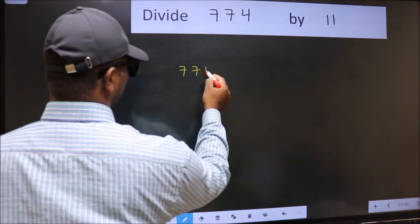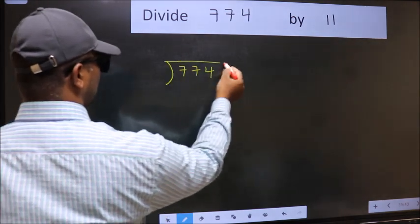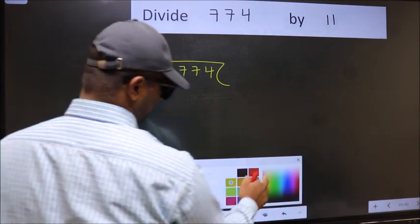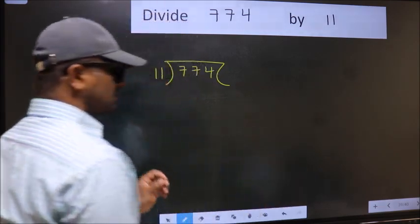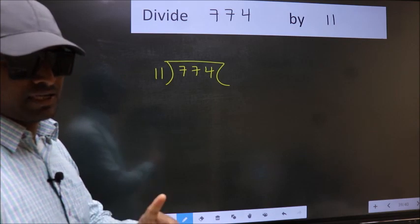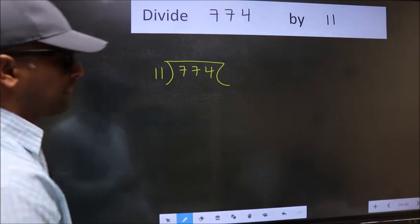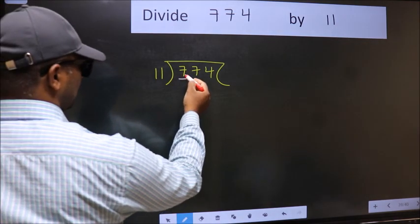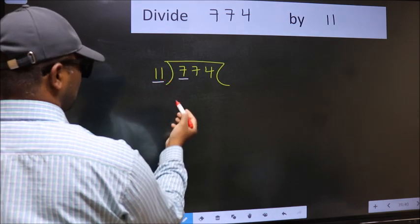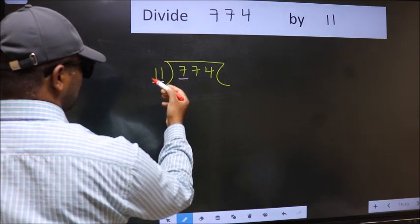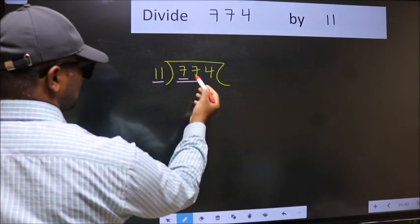774 and 11 here. This is your step 1. Next, here we have 7 and here 11. 7 is smaller than 11, so take two numbers, 77.